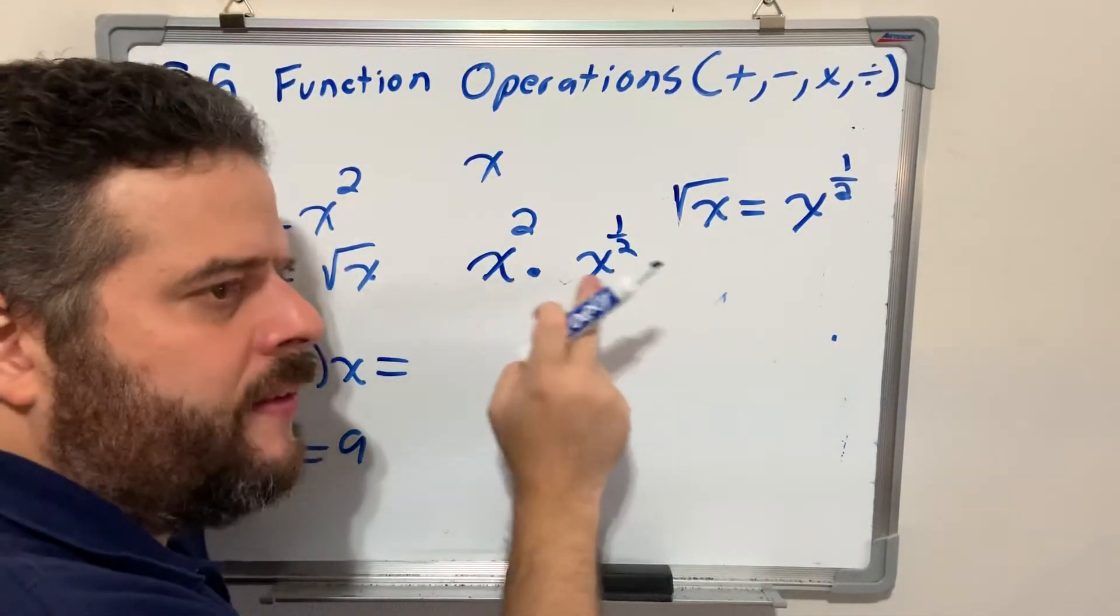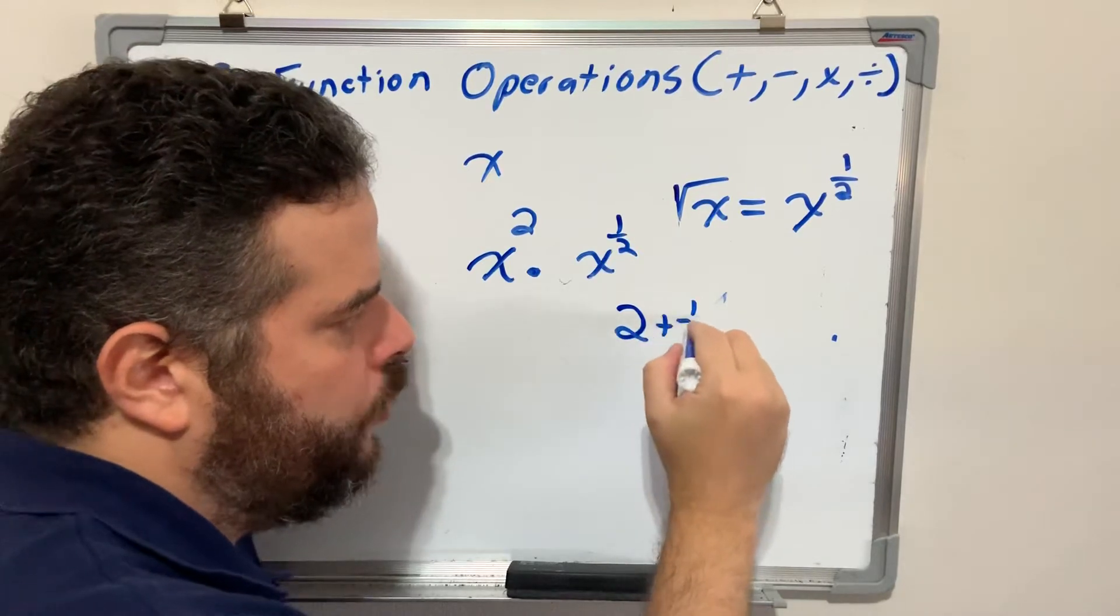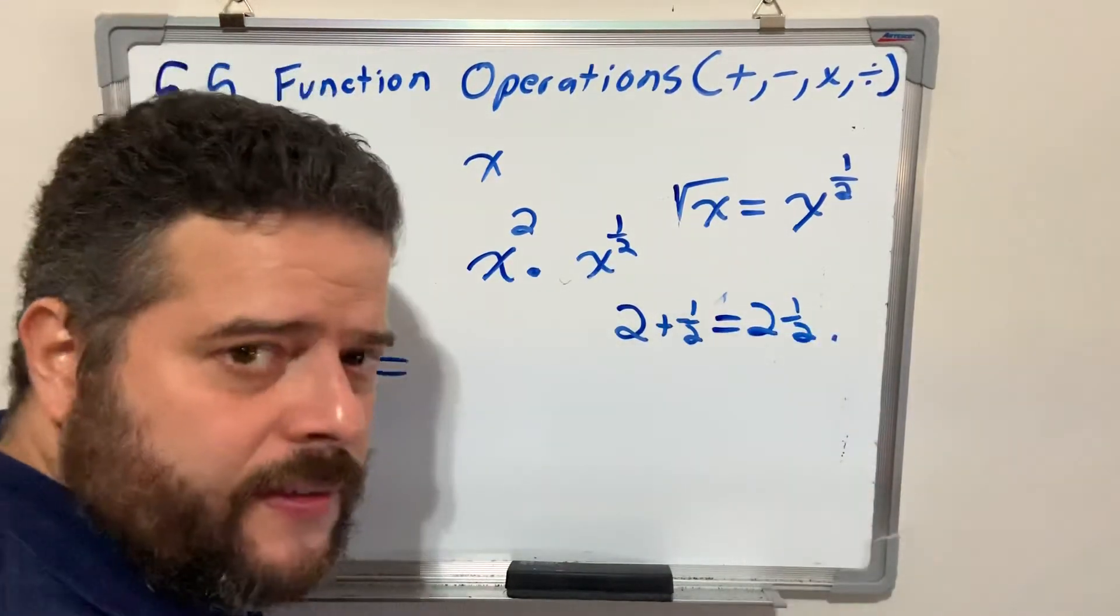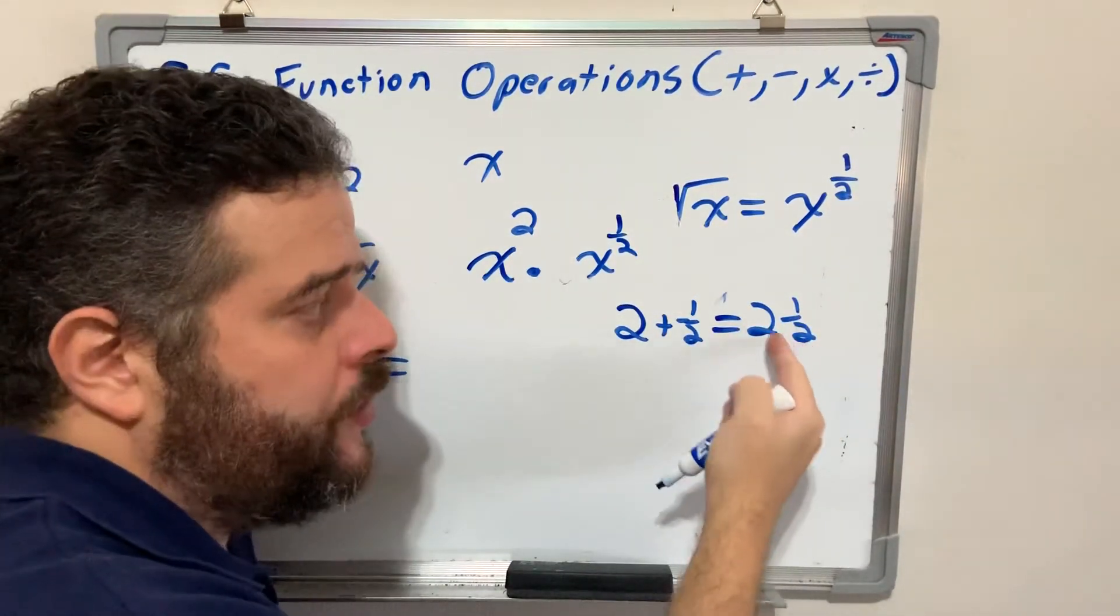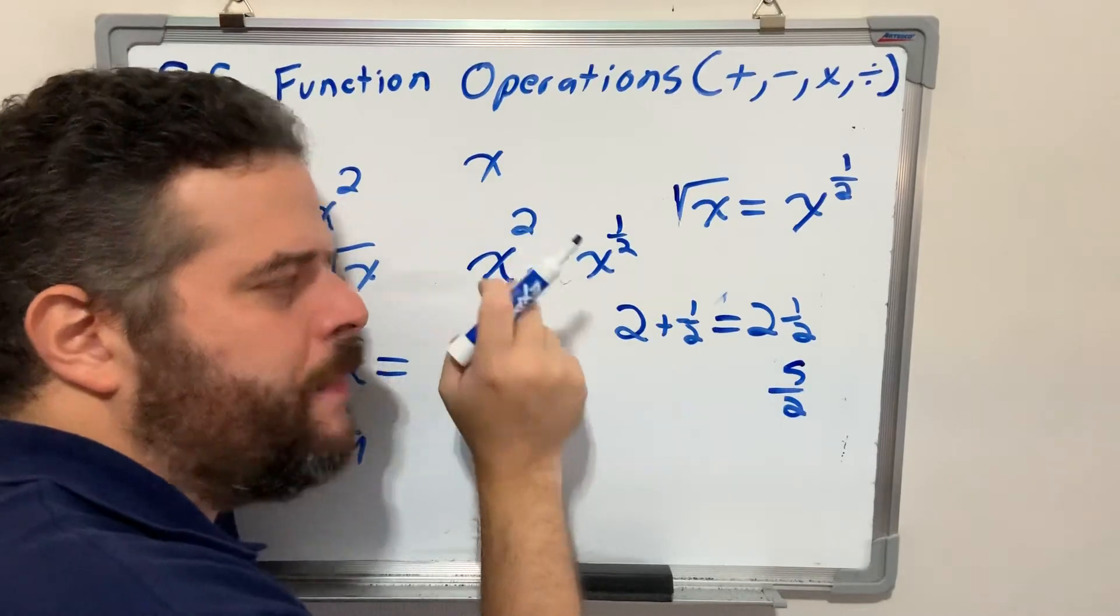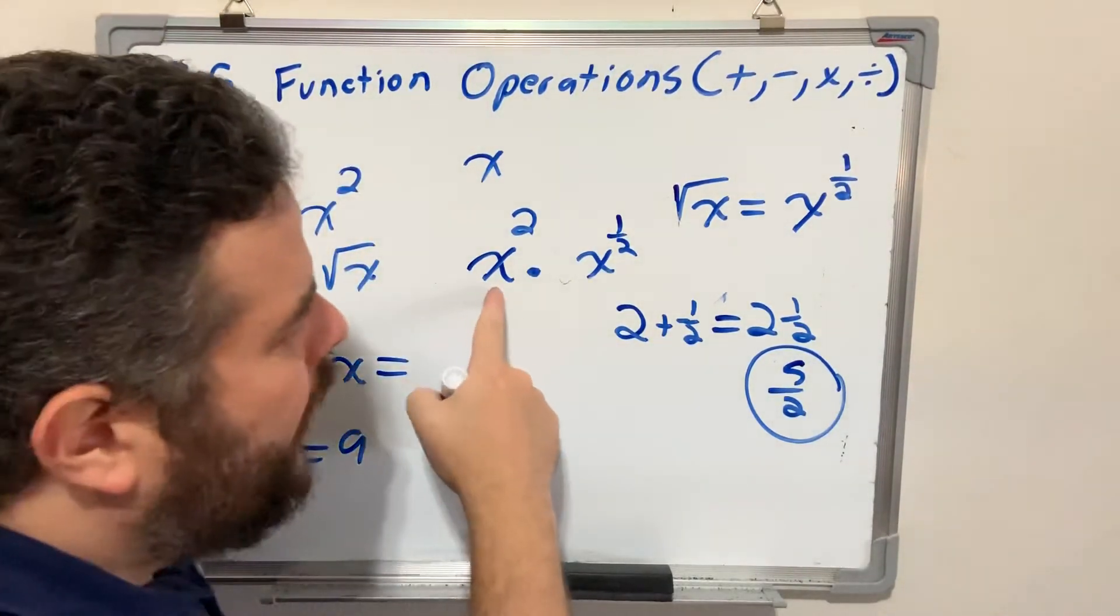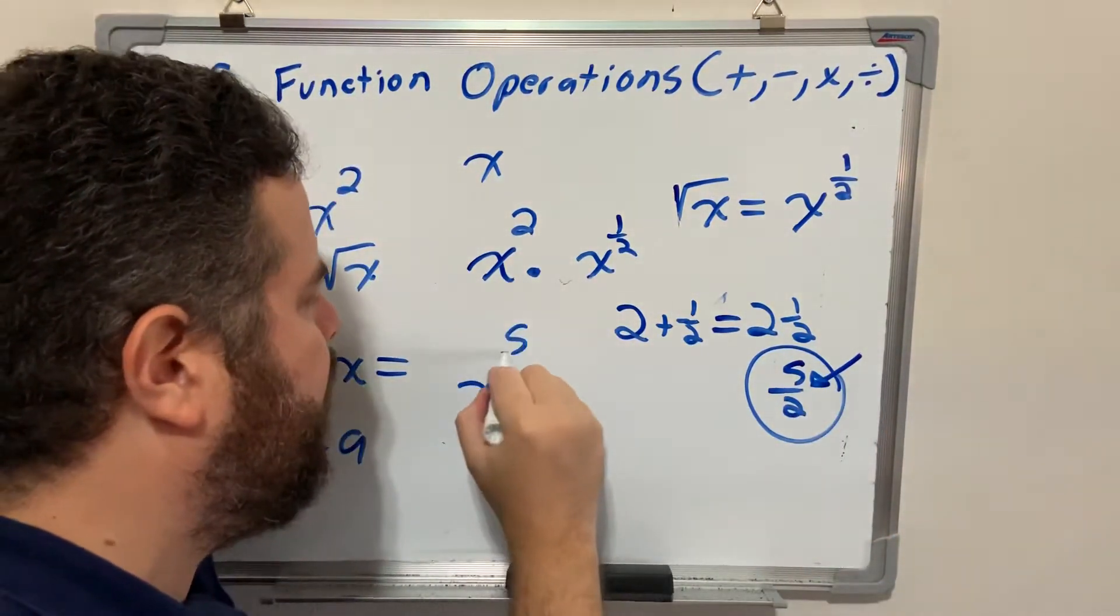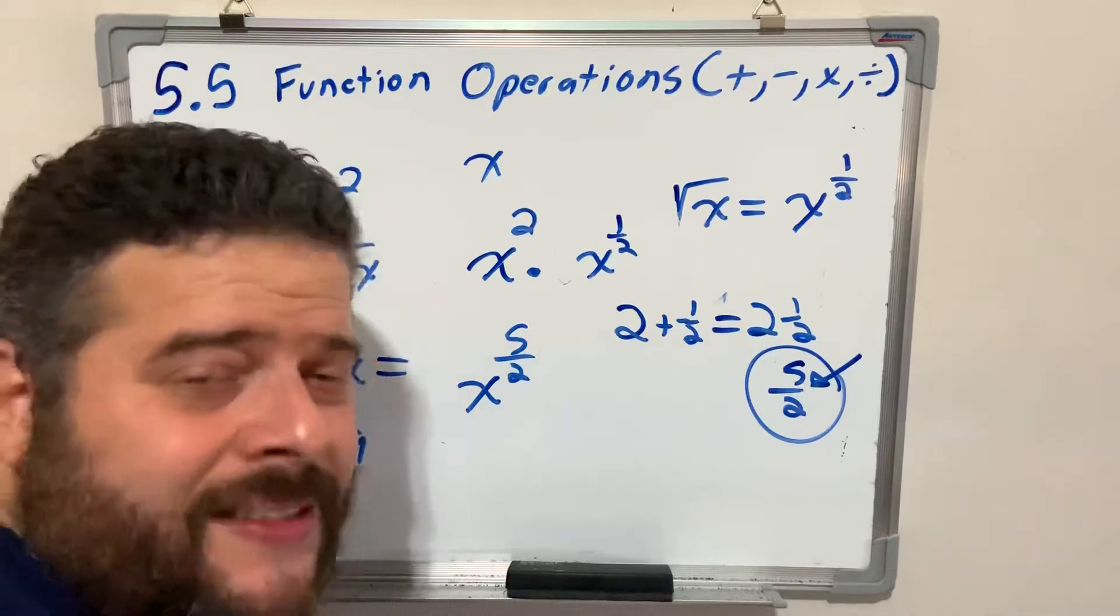When we multiply same base variables, you add the exponents. We're going to add 2 plus 1 half. If you have two pizzas and you add half a pizza, you got 2 and a half pizzas. To convert this into an improper fraction, multiply and add, and leave the same denominator. 2 times 2 is 4, plus 1 is 5 over 2. Working with these types of problems, always turn it into an improper fraction. When I multiply this by this, I add the exponents. I am left with x elevated to the 5 halves.